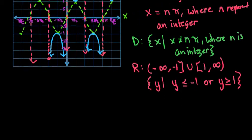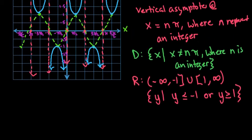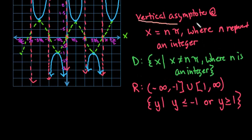So the last thing that I want to do is I want to just talk to you about some important things. Remember, we did already talk about the fact that we do have vertical asymptotes at x = nπ. This is a discontinuous function.